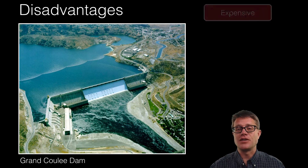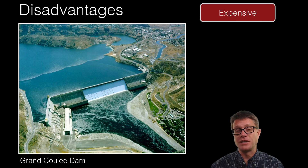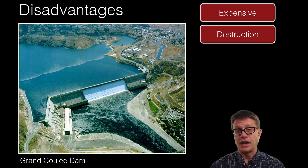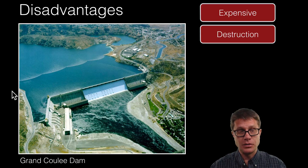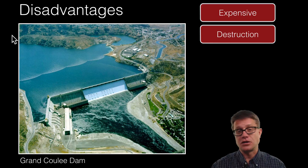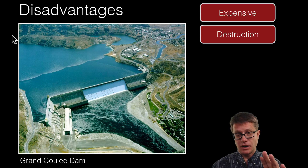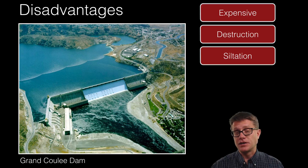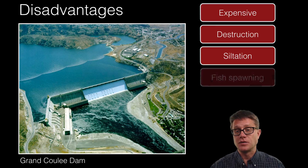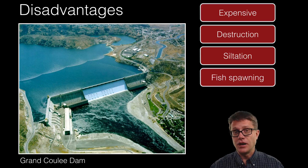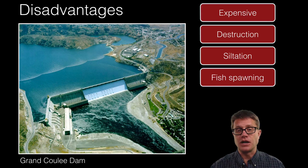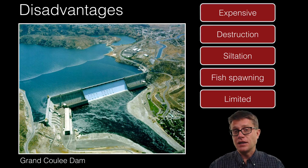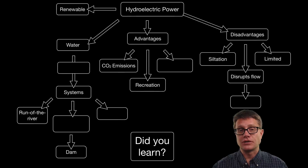What are some disadvantages? Like everything, they are incredibly expensive to build and maintain. They destroy everything that was there before — displacing humans and covering up Native American tribal areas. Siltation is a problem: silt fills in the reservoir and eventually it becomes useless. Fish cannot move up — they can put in fish ladders but they are not super effective. And it is limited: there are limited places on our planet where we can actually use hydroelectric power.